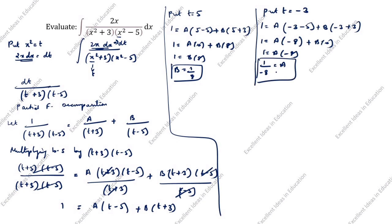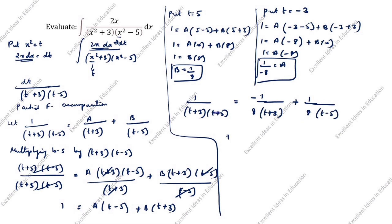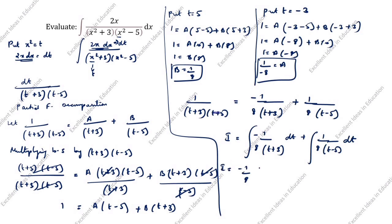Now substitute the values of a and b back. We get 1/[(t+3)(t-5)] = (-1/8)/(t+3) + (1/8)/(t-5). The integral becomes: ∫(-1/8)/(t+3) dt + ∫(1/8)/(t-5) dt. Taking the constants outside: (-1/8)∫1/(t+3) dt + (1/8)∫1/(t-5) dt.